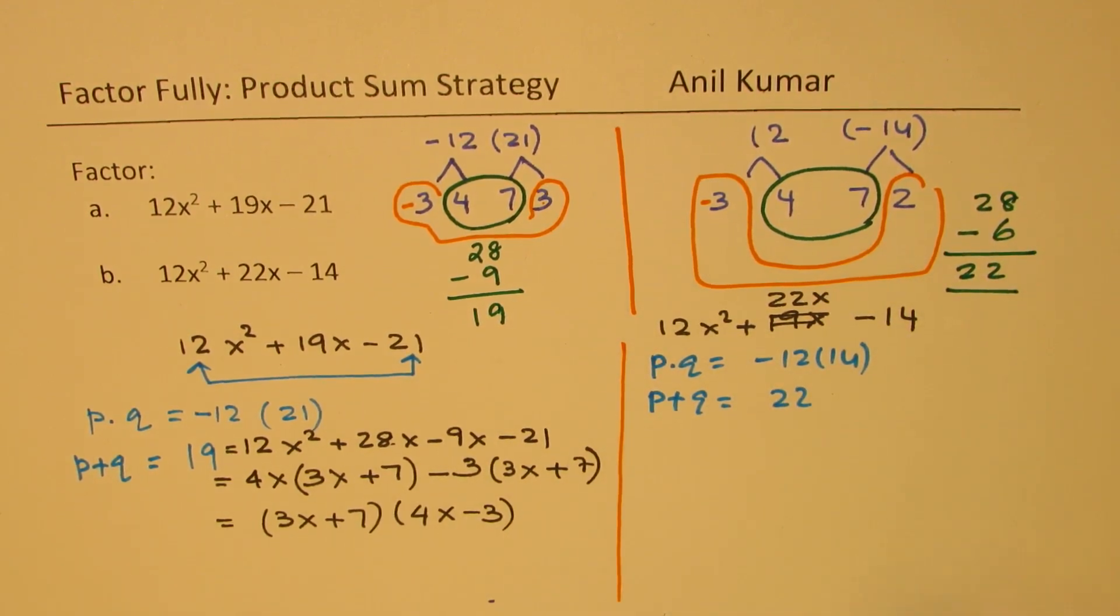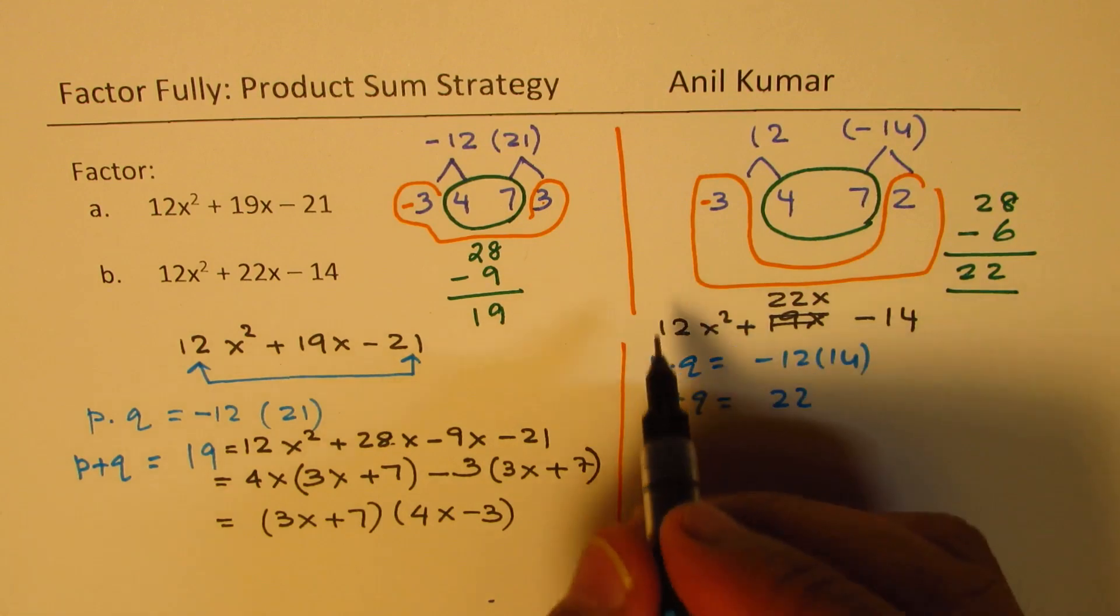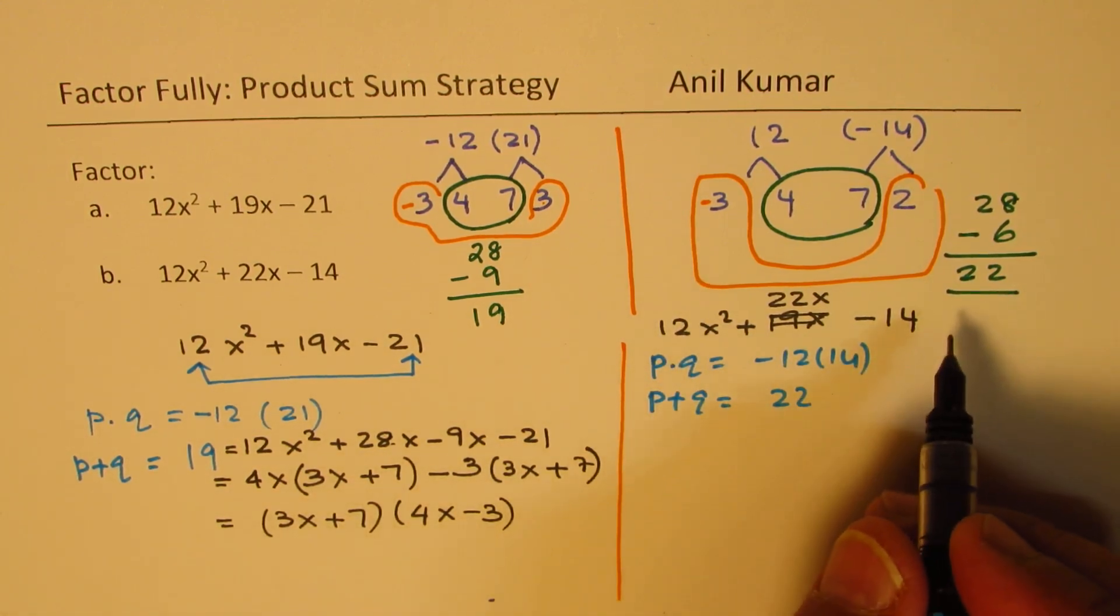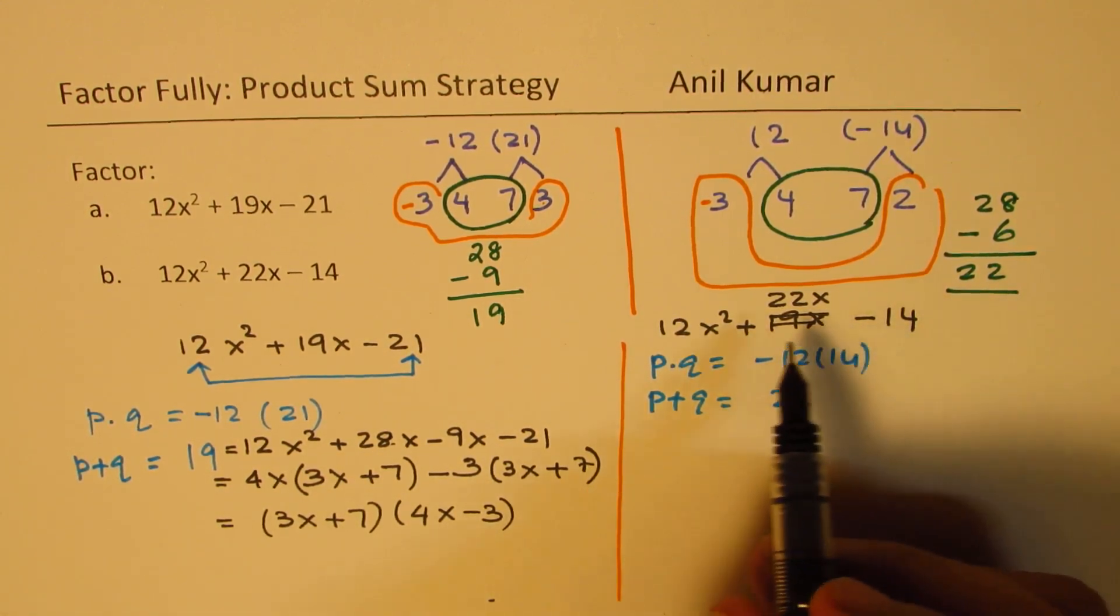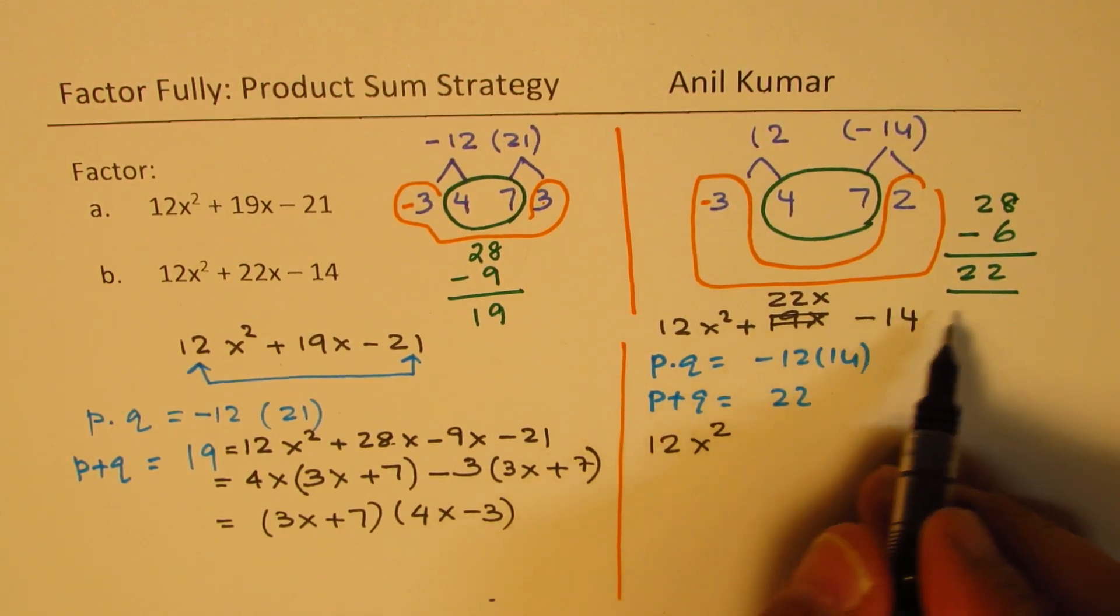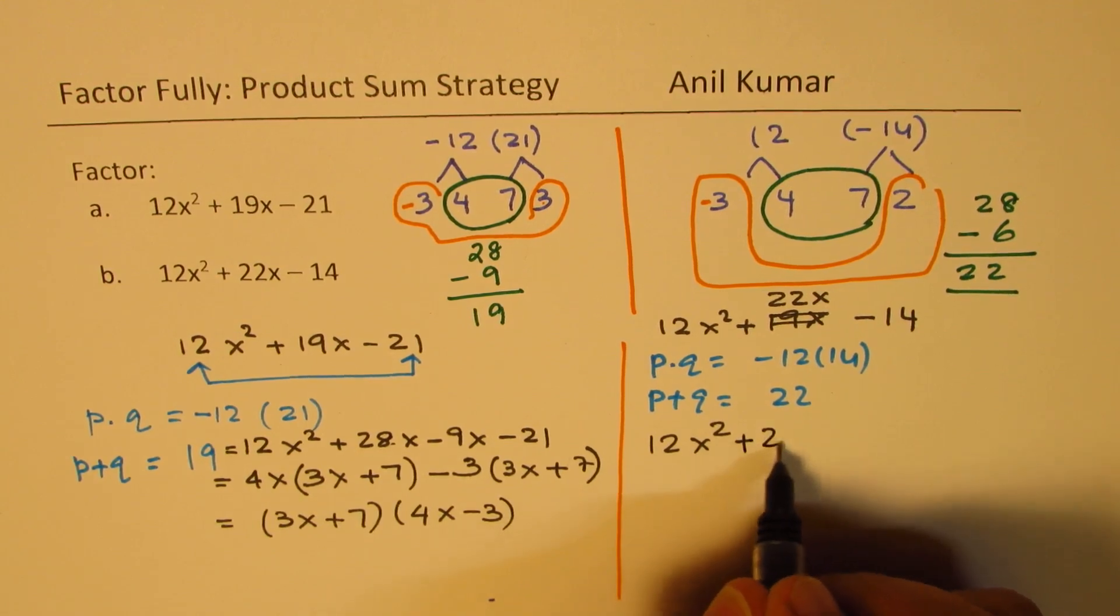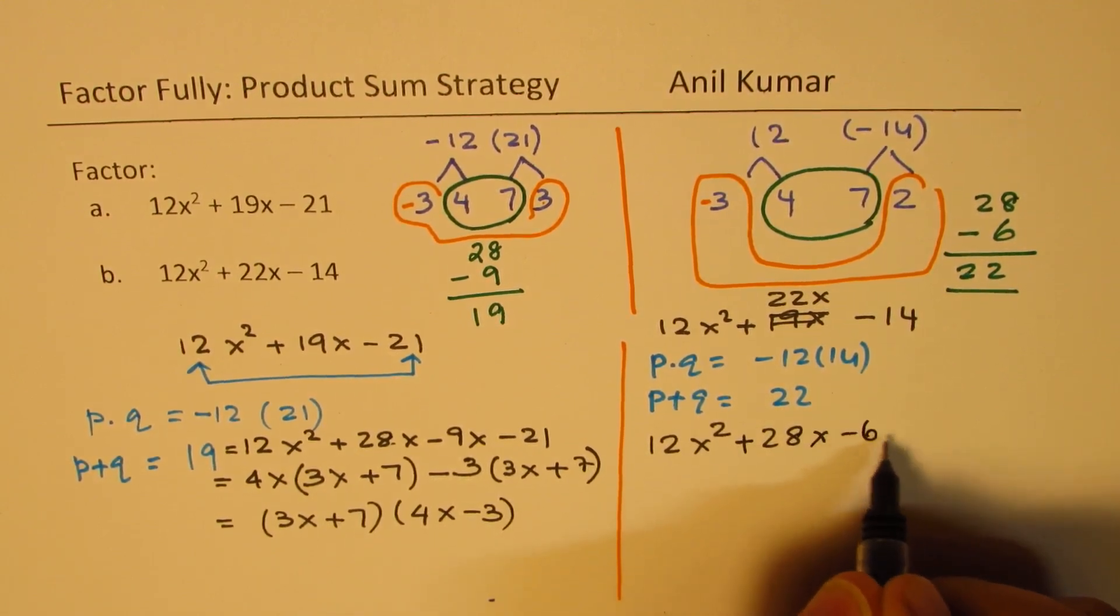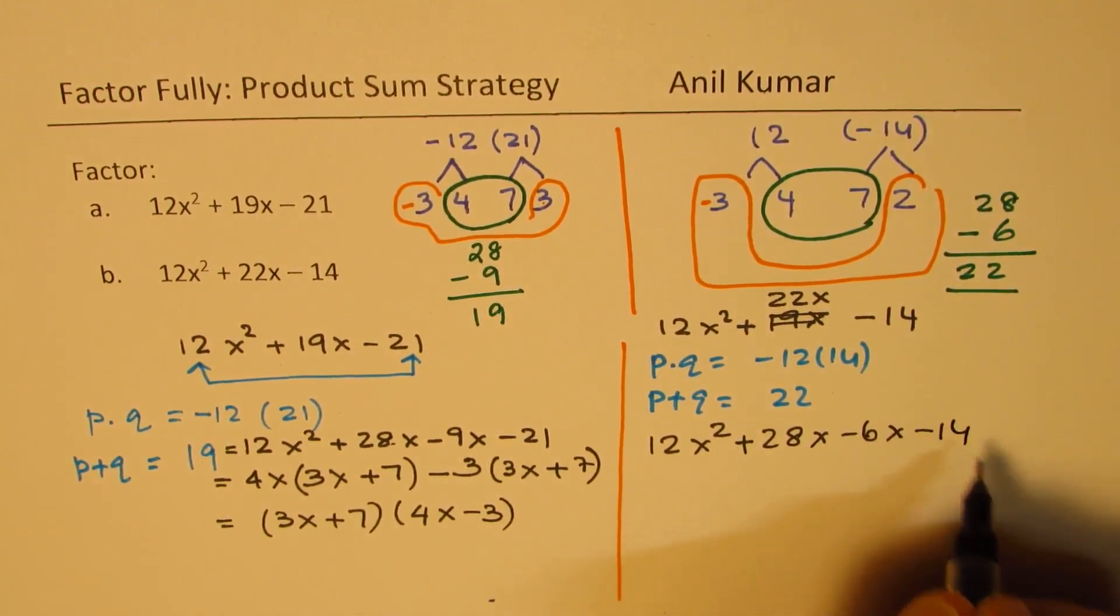And therefore, we can actually write the part b, this is part b, as what? We can write this as 12x² and 22 I'll write as +28x - 6x - 14.